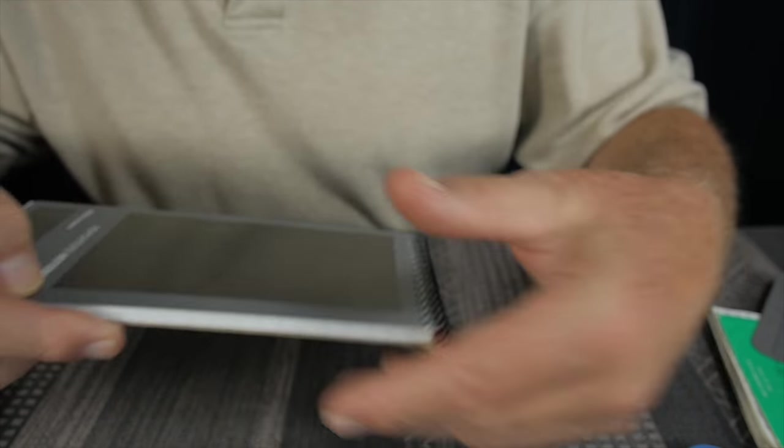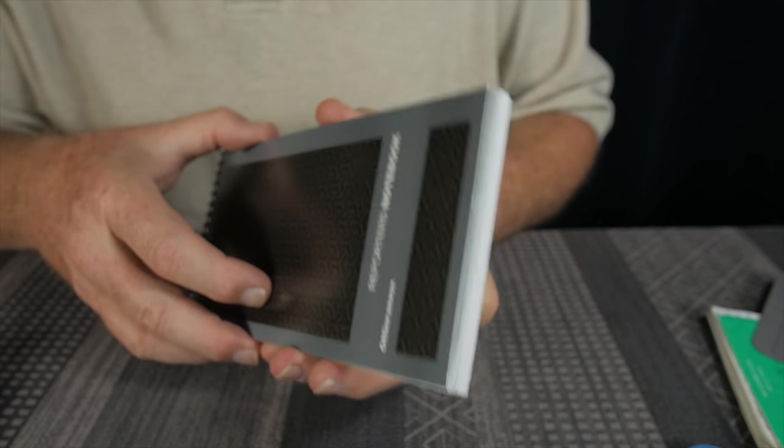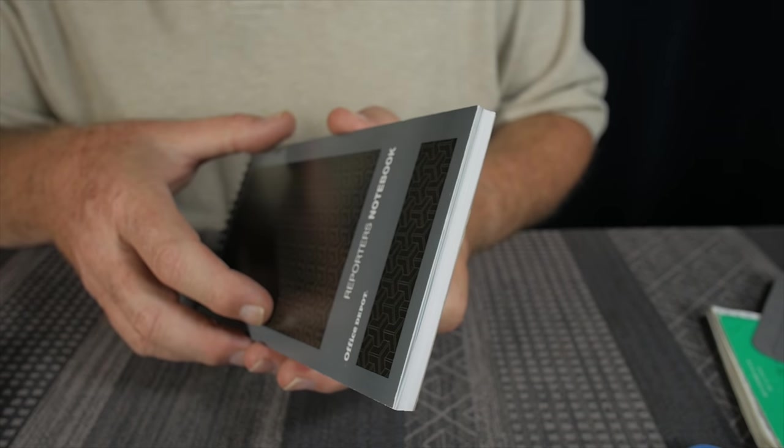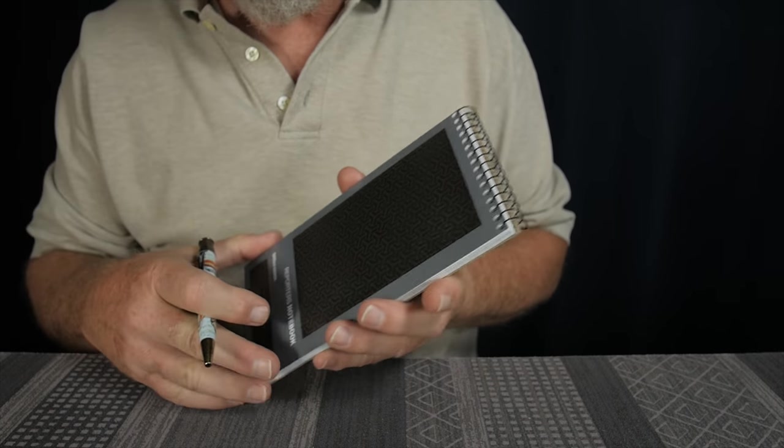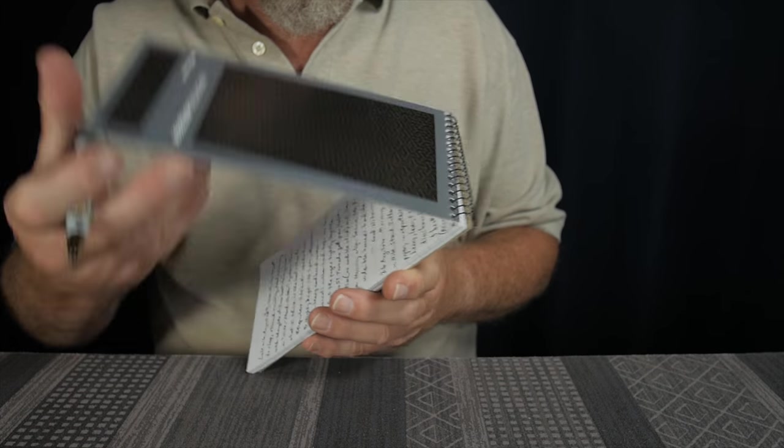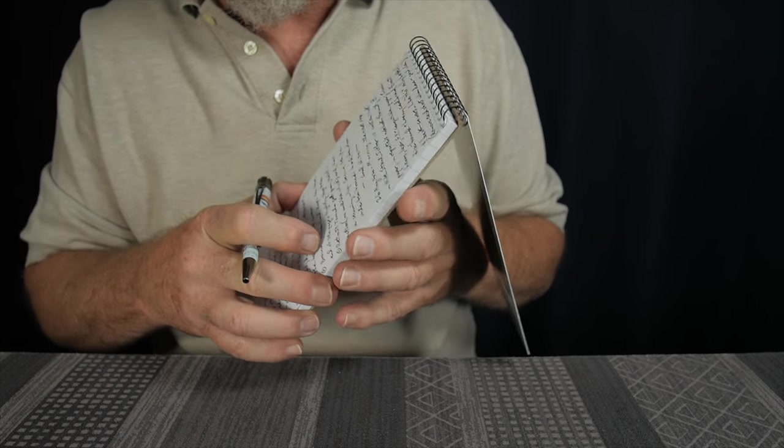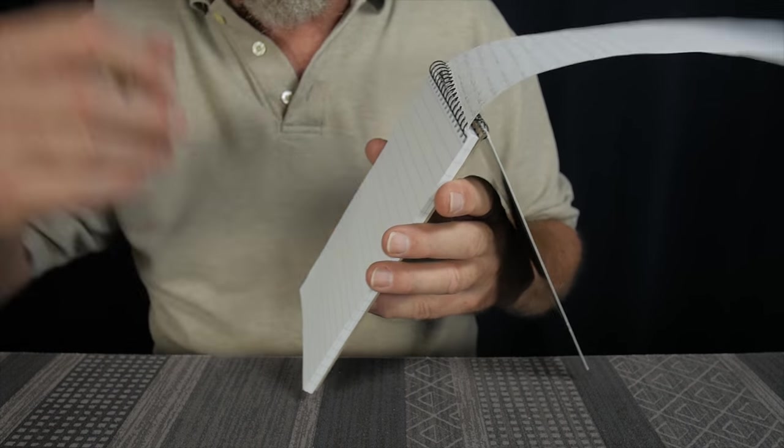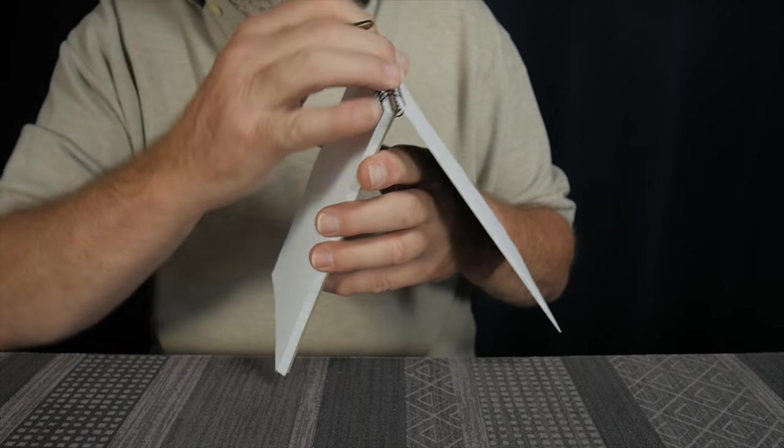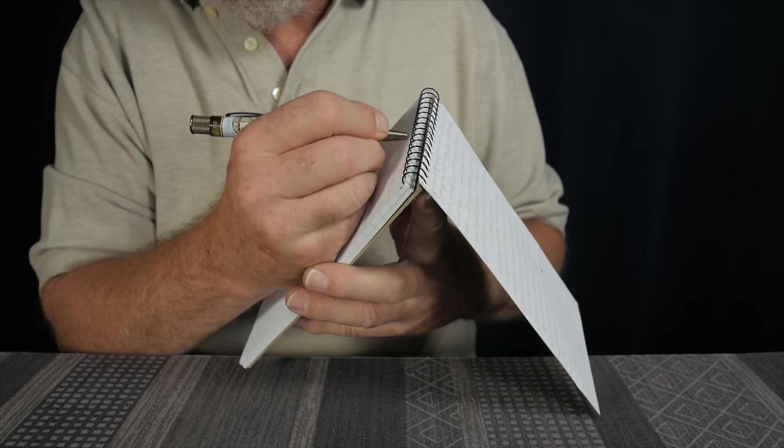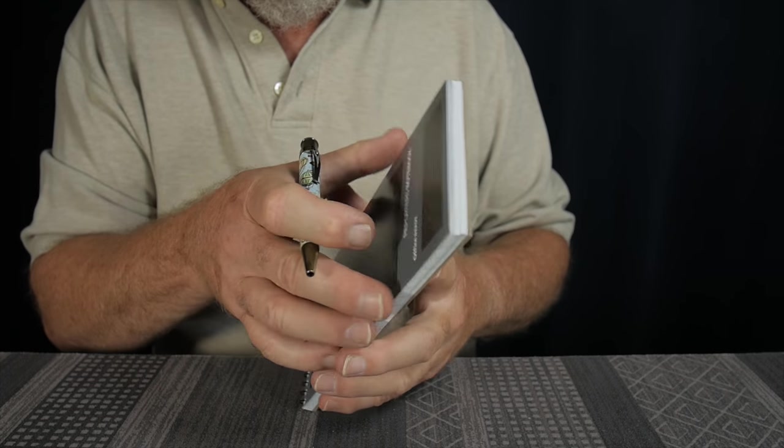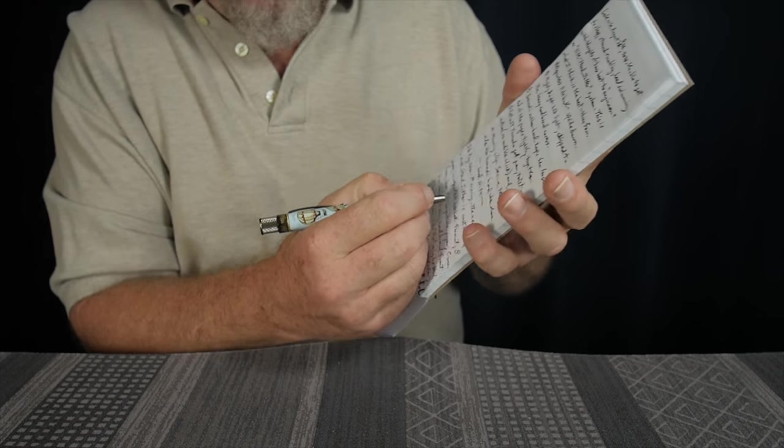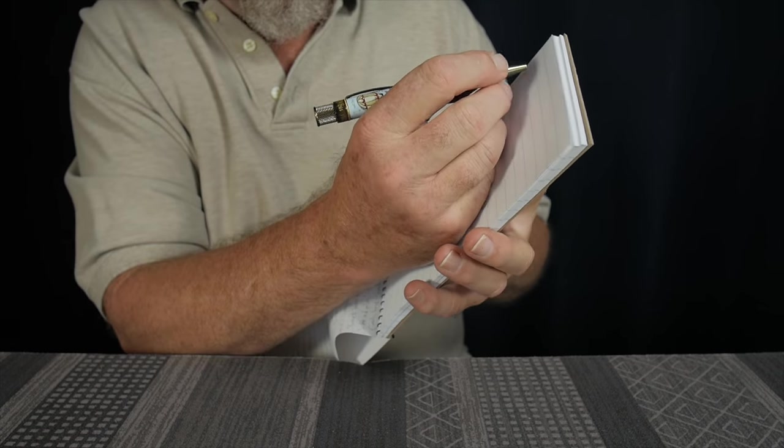So thinking about this, I think what I'm going to do is I'm going to use this upside down. Now there are some benefits to operating a notebook like this upside down. So if you're using the reporter's notebook in the traditional configuration, let's say you are a reporter, you're hurriedly taking notes, and you get to the bottom of the page, you're going to have to stop and kind of flip the paper up against the force of gravity and make sure it goes over the coil binding good before you can continue.